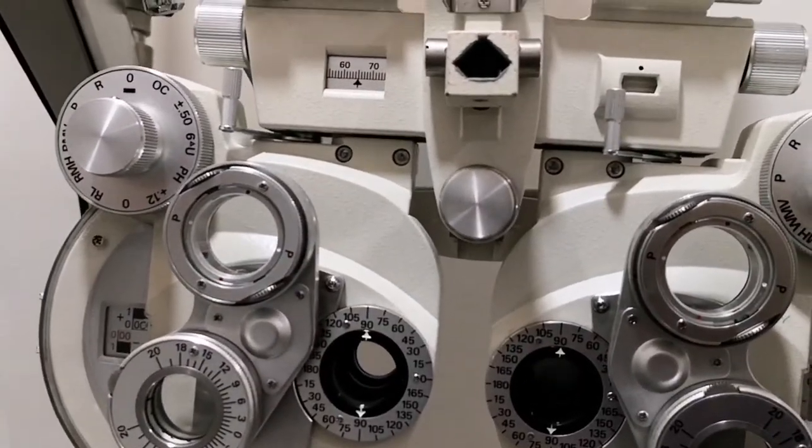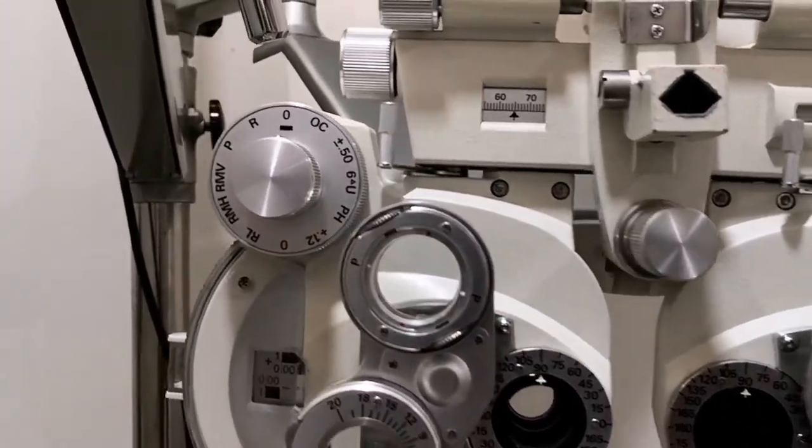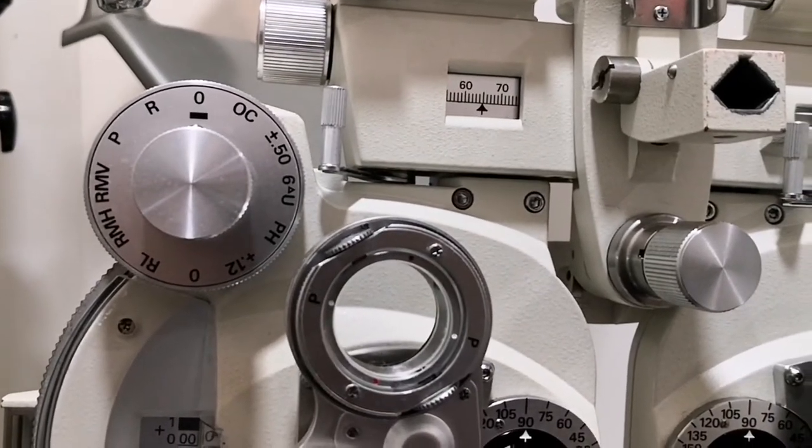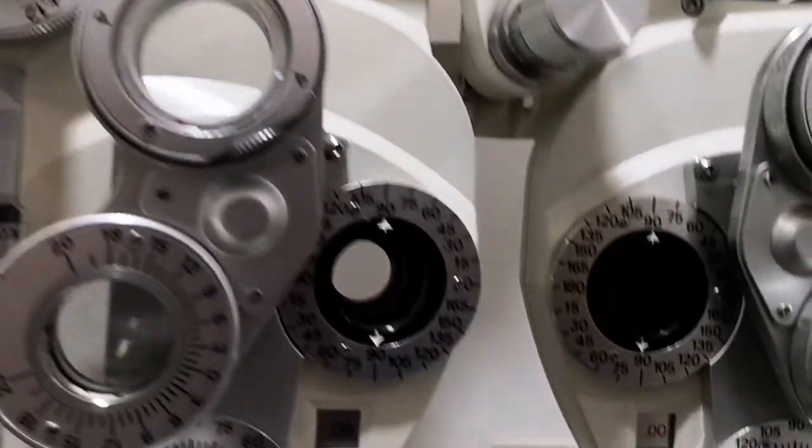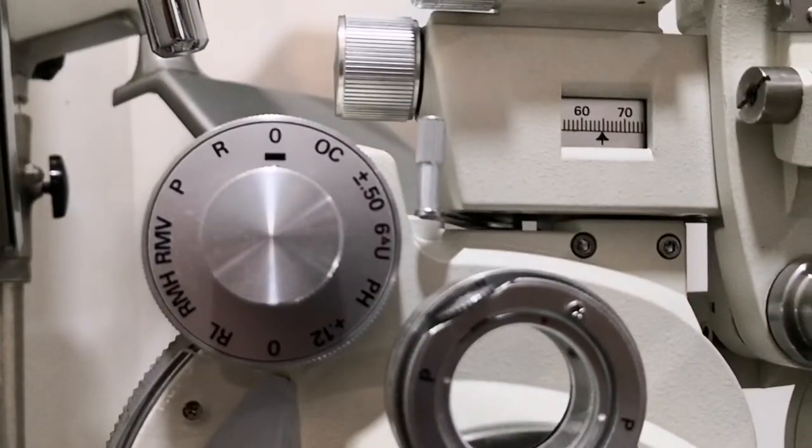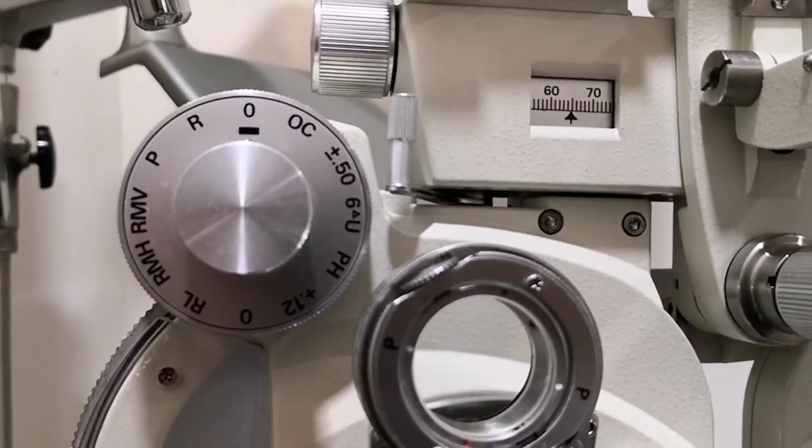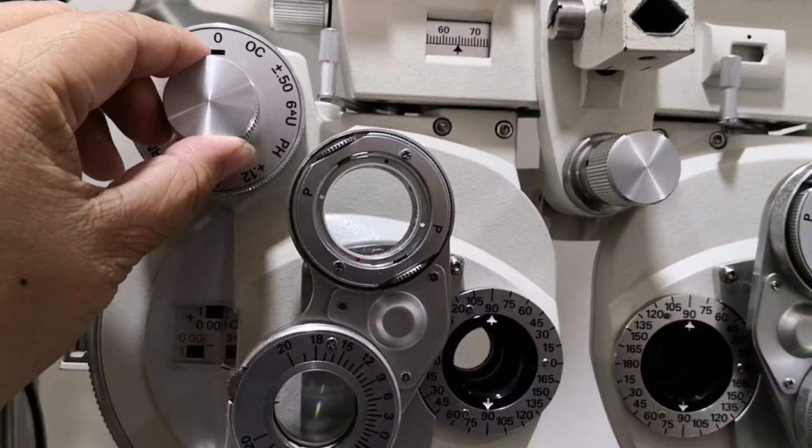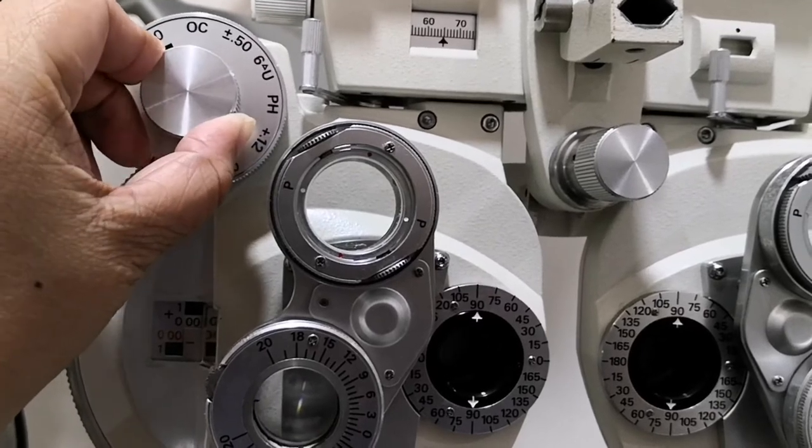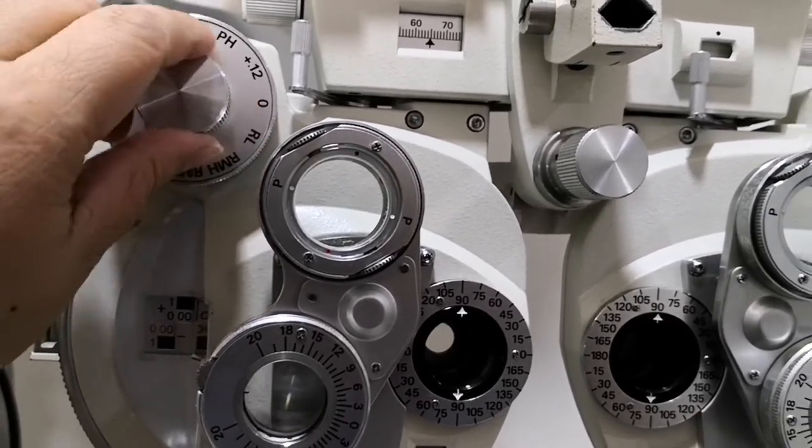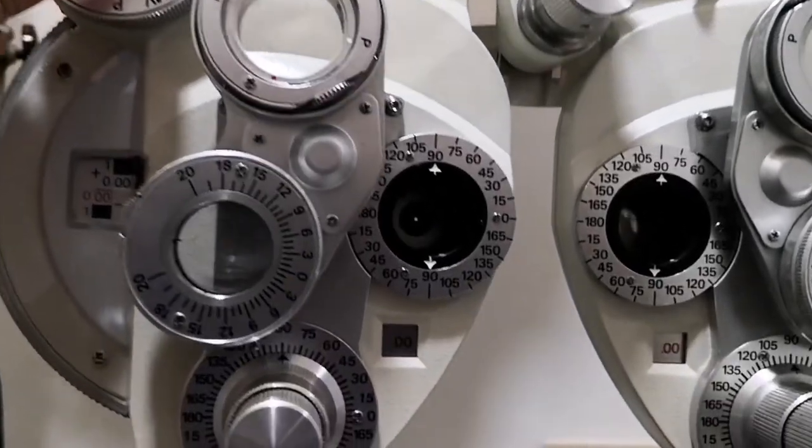The next part of the phoroptor is the auxiliary lens or aperture control. The aperture control determines what the patient looks through when behind the phoroptor. It consists of O for open, OC for occlude, and PH for pinhole.